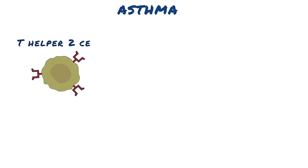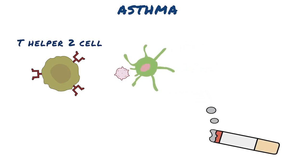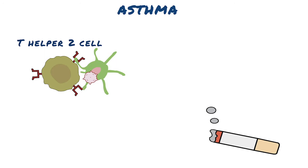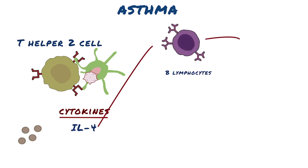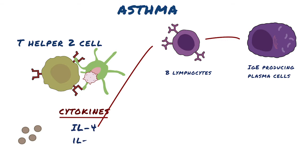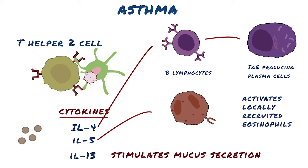A fundamental abnormality in asthma is an exaggerated T helper 2 cell response to normally harmless environmental antigens. Allergens from environmental triggers, like cigarette smoke, are picked up by dendritic cells, which present them to a T helper 2 cell. T helper 2 cells secrete cytokines, including interleukin-4, which stimulates B lymphocytes to switch to IgE-producing plasma cells; interleukin-5, which activates locally recruited eosinophils; and interleukin-13, which stimulates mucus secretion from bronchial submucosal glands and also stimulates B lymphocytes to switch to IgE-producing plasma cells.